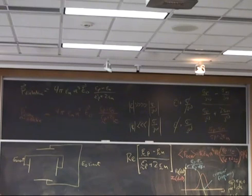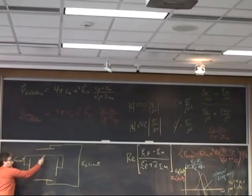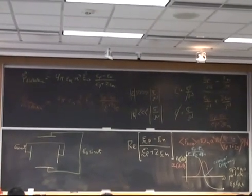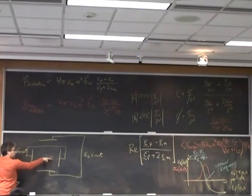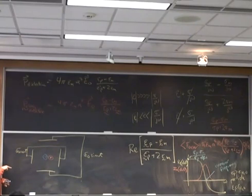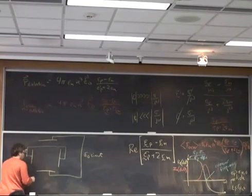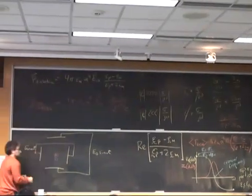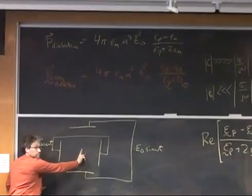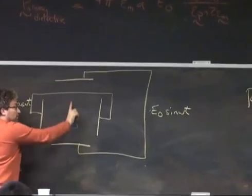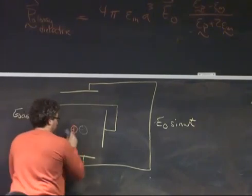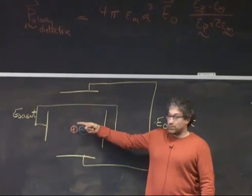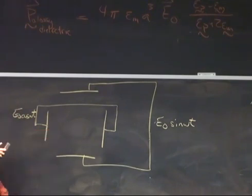Let's consider the torque on that particle based on the phase lag. If the electric field is rotating and the dipole is perfectly in phase — so the dipole moves perfectly in phase with the field — is there a torque? When the electric field points in one direction and the dipole is oriented in the same direction, there's no torque. So if the dipole is in phase, it creates no torque. The real part of the Clausius-Mossotti factor tells me nothing about the torque in this system.